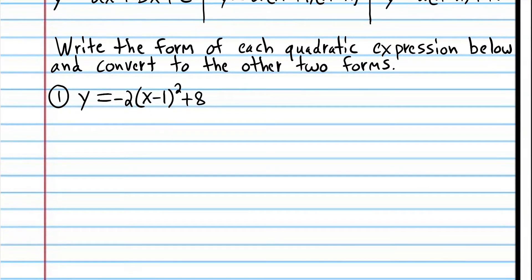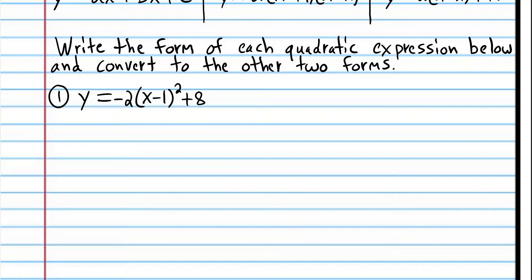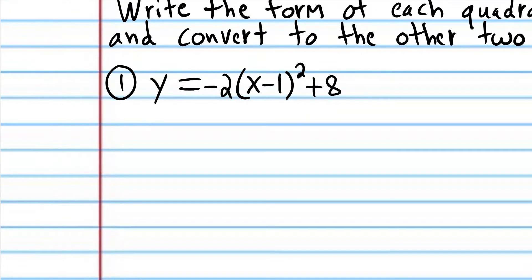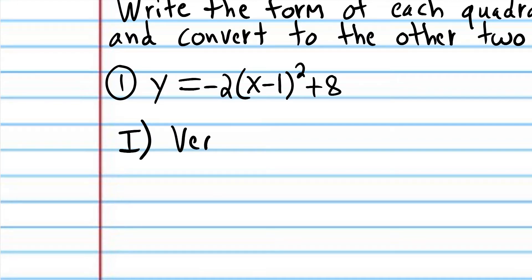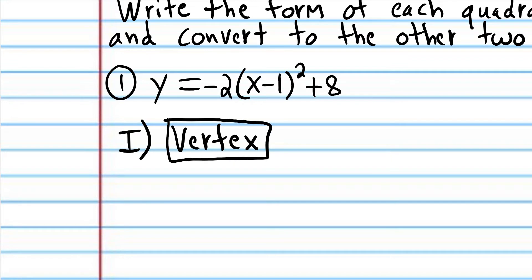The problem says to write the form of each quadratic expression below, then convert to the other two forms. The form of this expression is vertex form, so we're just going to write 'vertex' — and that's part of the answer, so we're going to rectangle that.